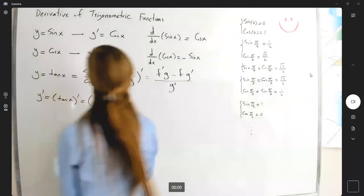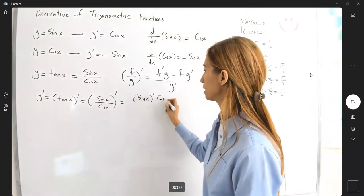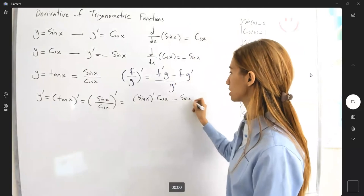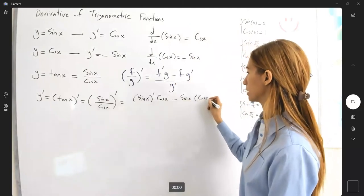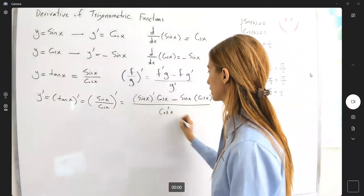We already know what the derivative of sine is. We multiply that by cosine minus sine x times the derivative of cosine x. And everything is divided by cosine to the second power.